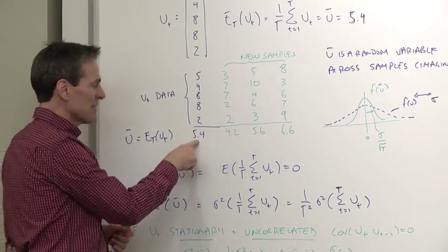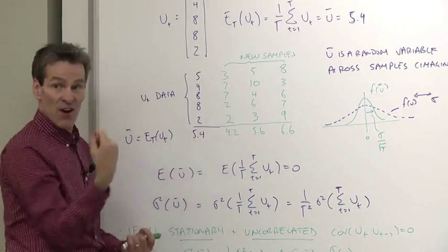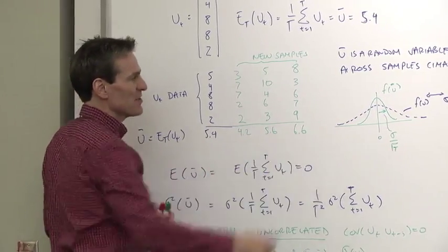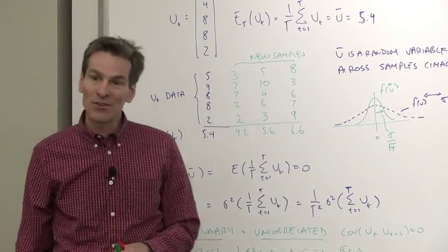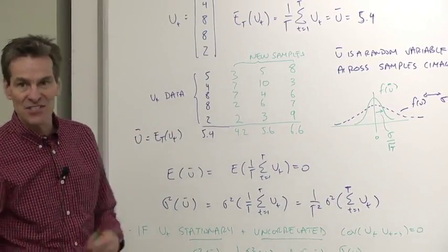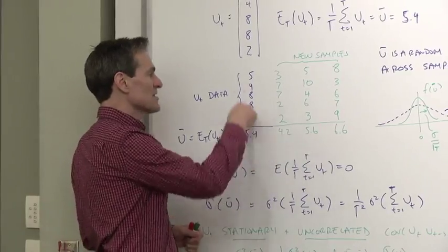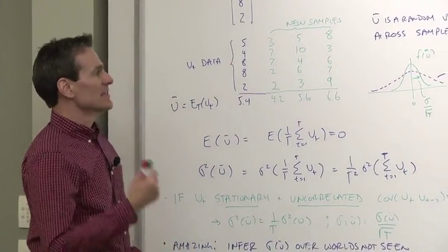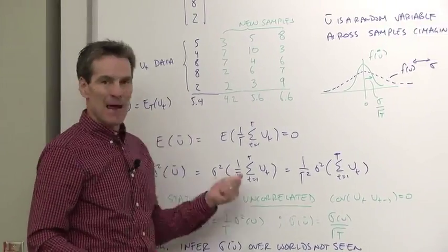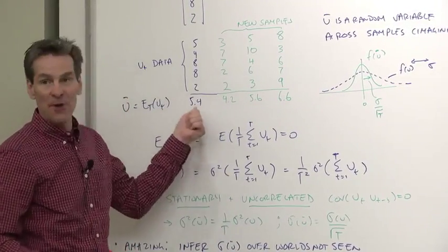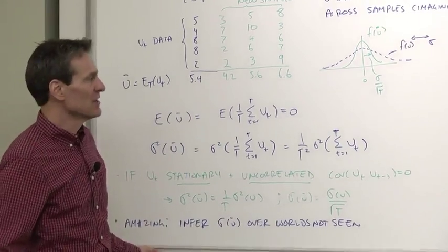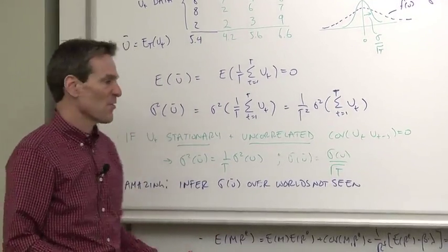That number, the sample mean, is a random variable. Not in our world, we only see one of them. But if we think about rerunning history over all sorts of different possible worlds, that's the statistician's question. That's the question of how much luck of the draw was there in what we saw. What is the distribution of the sample mean, even though it's a number in our world, across all these alternative worlds? Well, how do we answer that question?